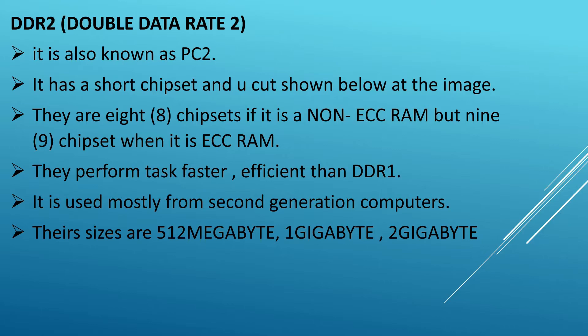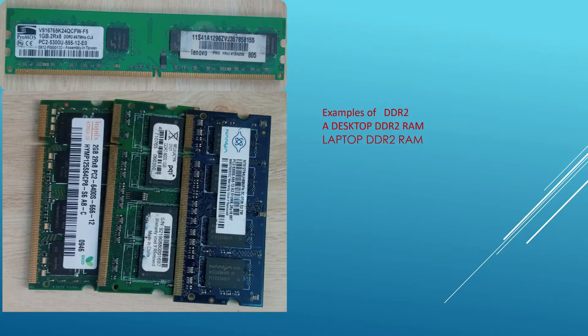DDR2 RAM is also known as PC2. It has a short chipset and U-notch. There are eight chipsets if it is a non-ECC RAM, but nine chipsets when it is ECC RAM. DDR2 performs tasks faster and more efficiently than DDR1 and is used mostly from second-generation computers onward. Their sizes are 512 megabytes, one gigabyte, and two gigabytes. Examples include a desktop RAM and laptop RAM in one-gigabyte and two-gigabyte sizes.